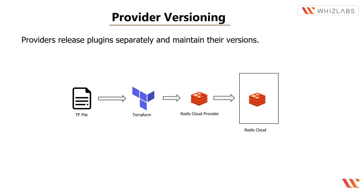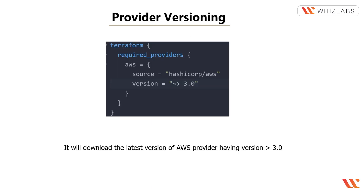A user can specify a version argument in the configuration file. The version argument is optional — if it is omitted, Terraform will accept any provider version. However, it is recommended to specify a version constraint for every provider. You can also create a dependency lock file to ensure Terraform always installs the identical provider version.